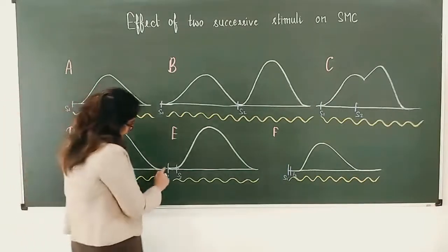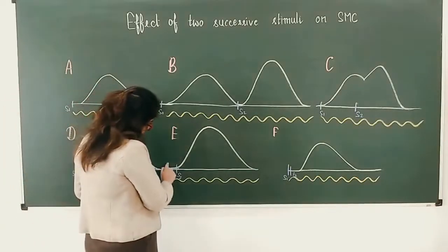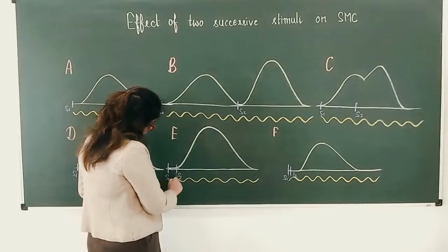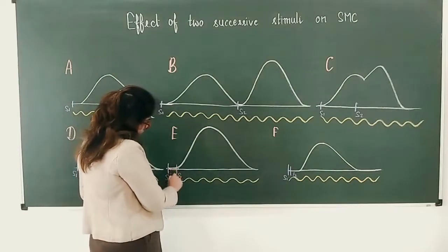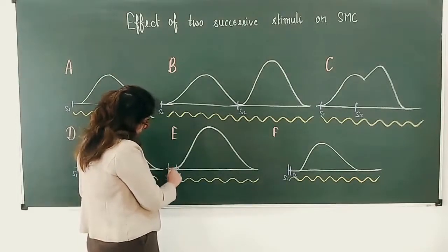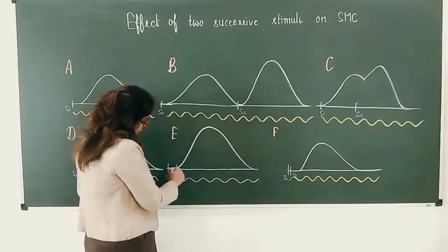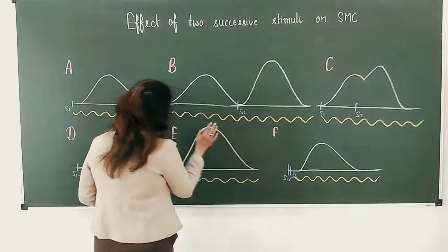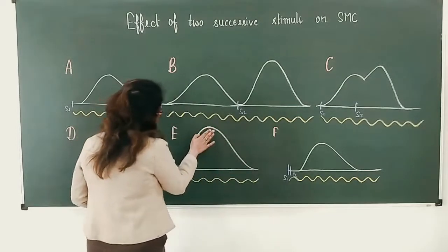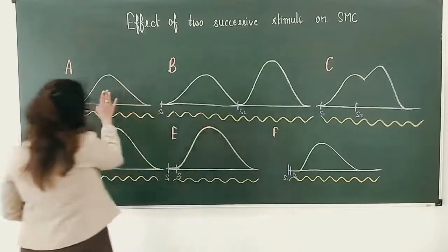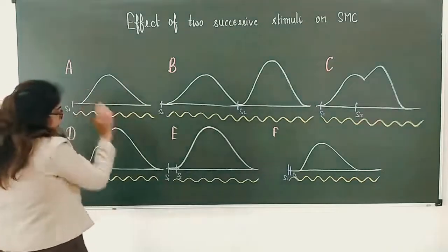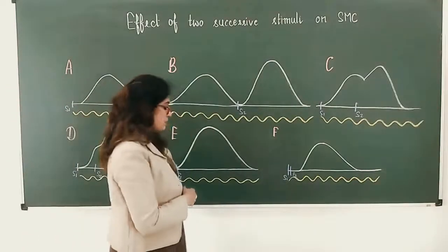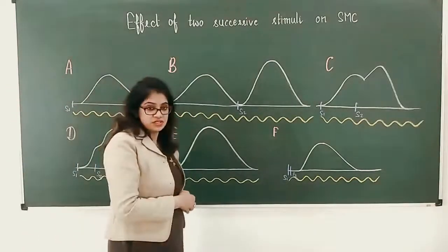Here we can see this is the first stimulus and the second stimulus is falling on the later part of the latent phase of the first stimulus, and we obtained the curve. Again, the height of the curve is more than the basic curve, and this is because of summation of the waves.